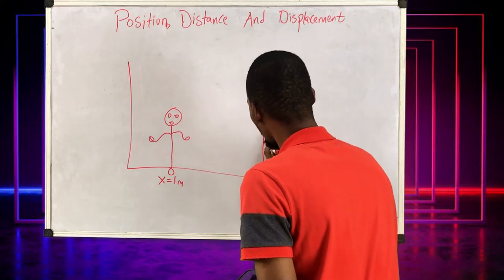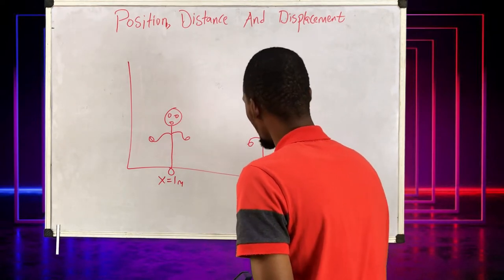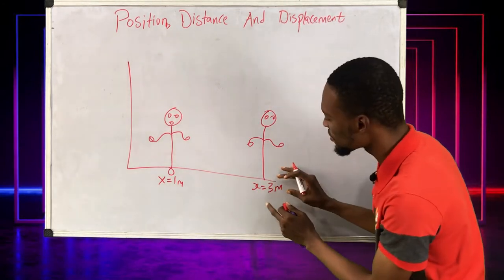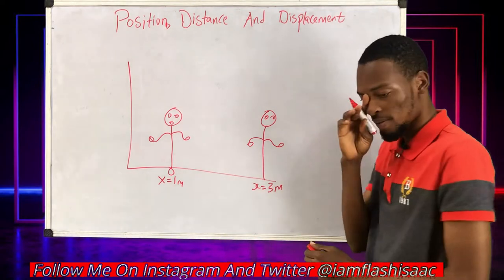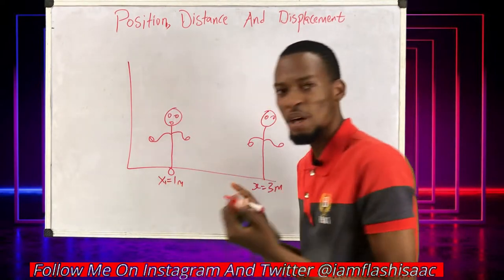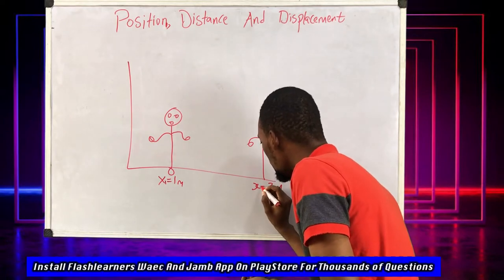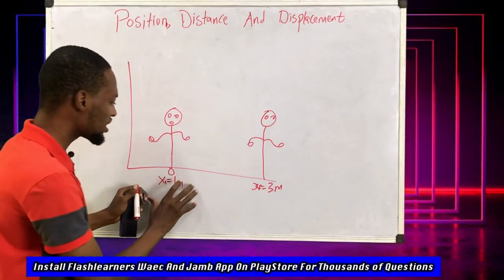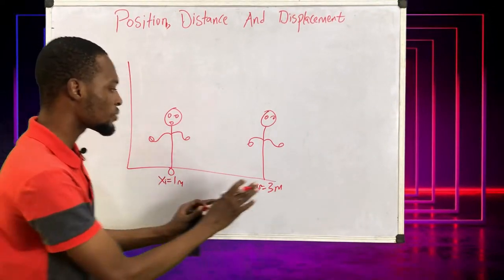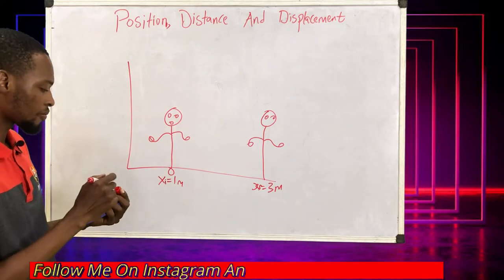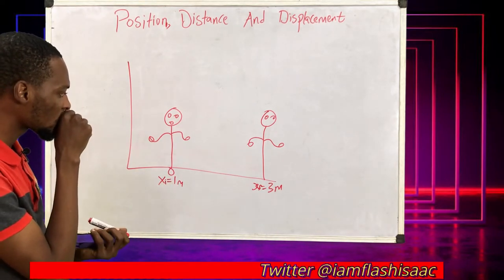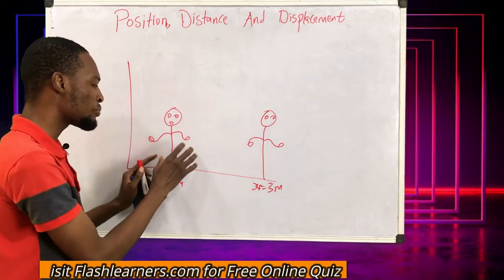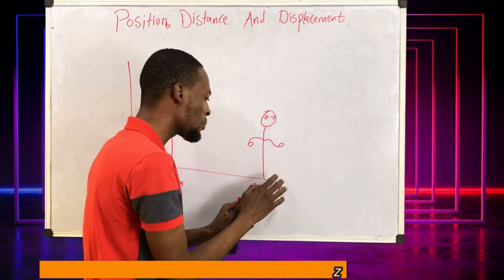Then I move and land here, so I am here now. Let's call this my position: three meters. So let's define s1 as my initial position and s2 or sf as my final position — both relative to earth.